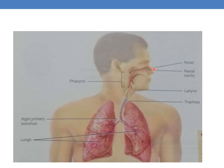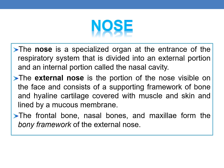Here you can see the nose, and inside, the internal nose is the nasal cavity. This part is the pharynx and this is the larynx. This is the trachea and this is the right primary bronchus. These are the right lung and the left lung. The nose is a specialized organ at the entrance of the respiratory system, divided into an external portion and an internal portion called the nasal cavity. The external nose is visible on the face and consists of a supporting framework of bone and hyaline cartilage covered with muscle and skin and lined by a mucous membrane.